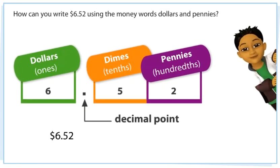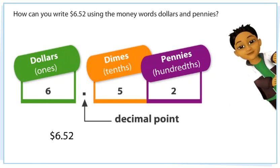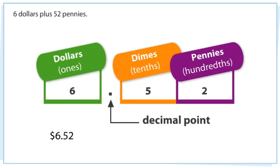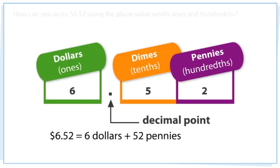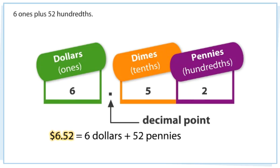How can you write $6.52 using the money words dollars and pennies? $6.52 equals 6 dollars plus 52 pennies, which equals 6 ones plus 52 hundredths.